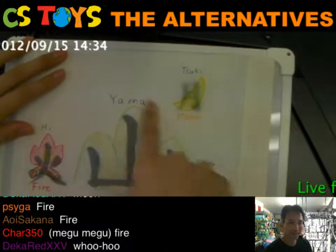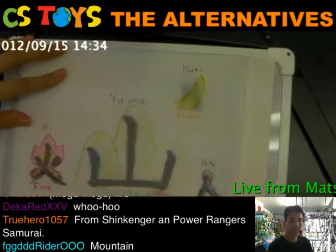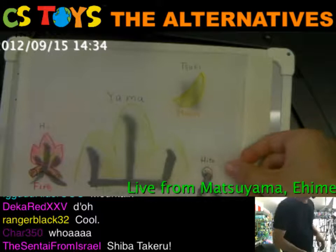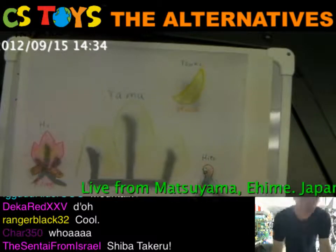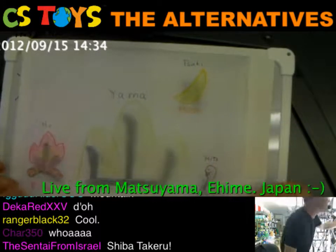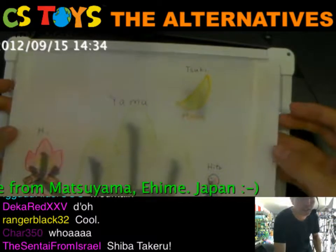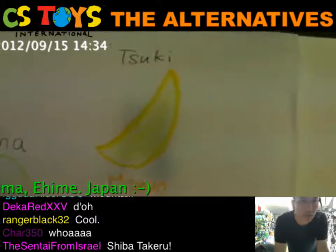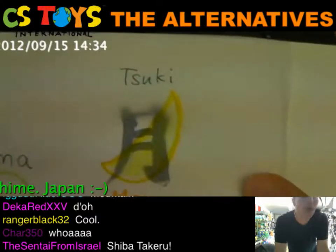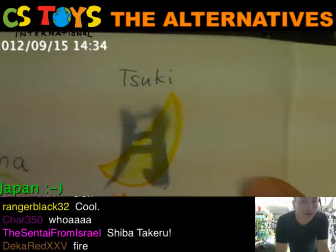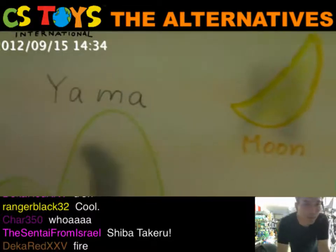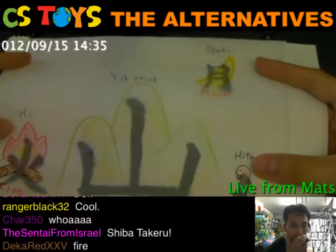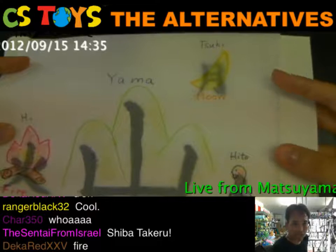This character is mountain, and this is fire, and this is people. It's very interesting - I'd like to see more. Can you show us the moon one please? Can you bring the camera a little bit closer? Oh, there you go! Very nice. How about the next one - yama? Yama is in the center, right? That looks exactly like a mountain!